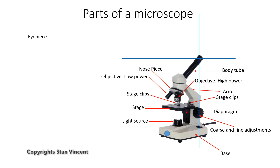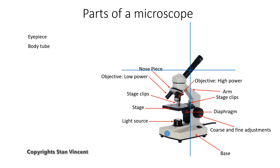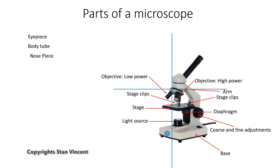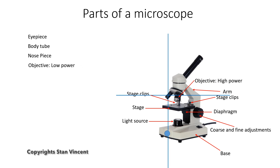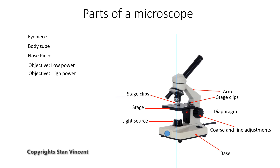The eyepiece. The body tube. The nose piece. The objective lens — the low powered one. The objective lens — the high powered one. There are three: 4x, 10x, and 40x.